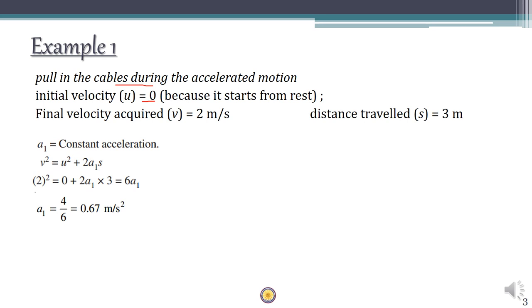During the acceleration motion, initial velocity U is zero, final velocity V is 2 m/s, and distance traveled S is 3 meters. Using Newton's law of motion: V² = U² + 2aS, we can find acceleration A1. Solving this expression, we get A1 equal to 0.67 m/s².